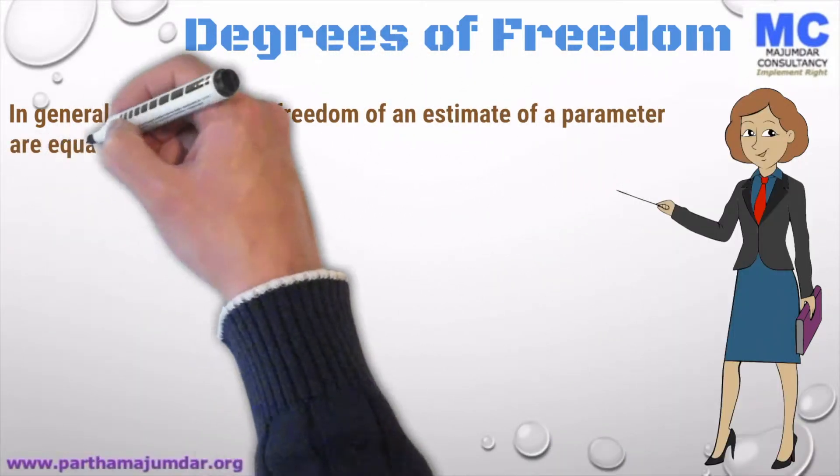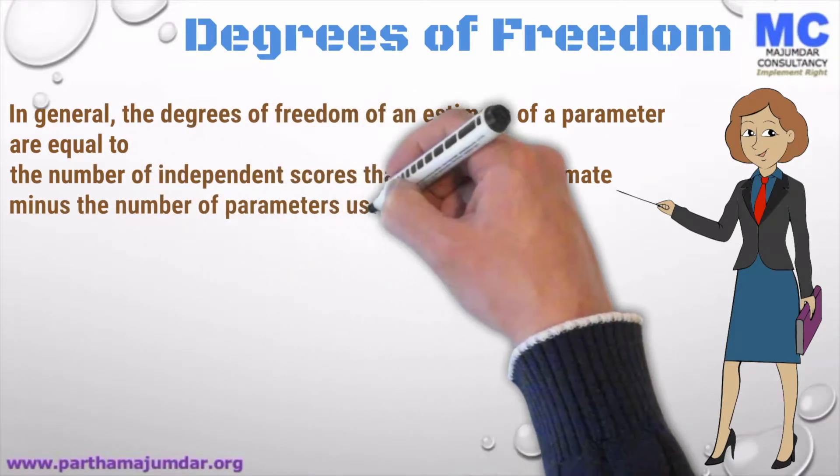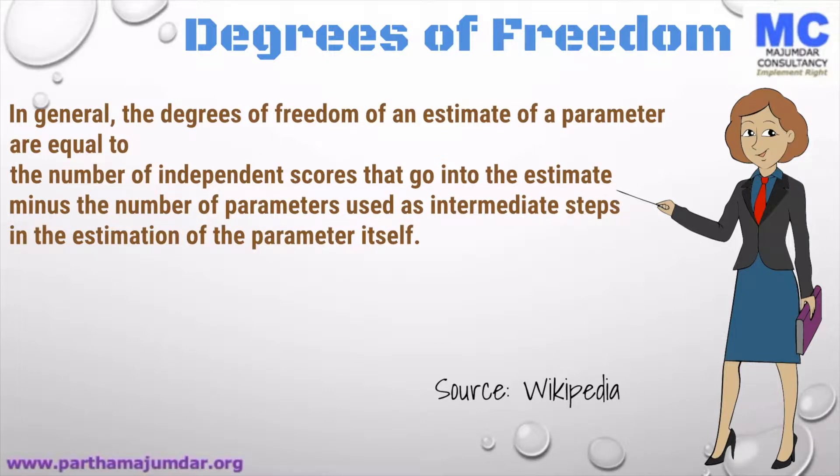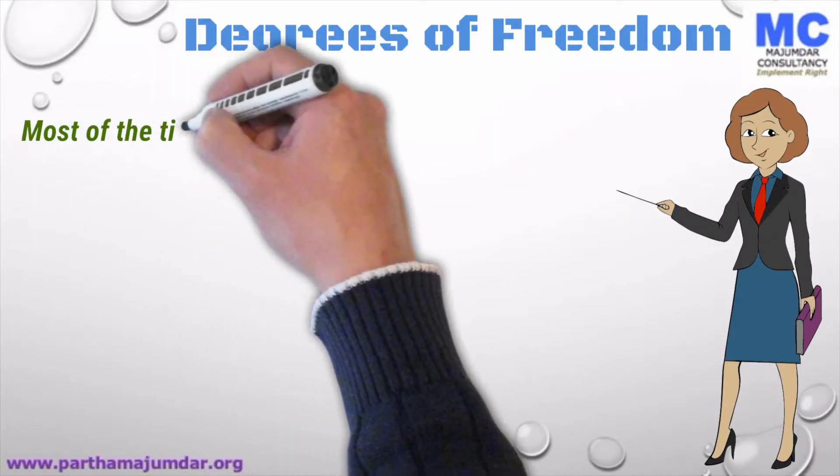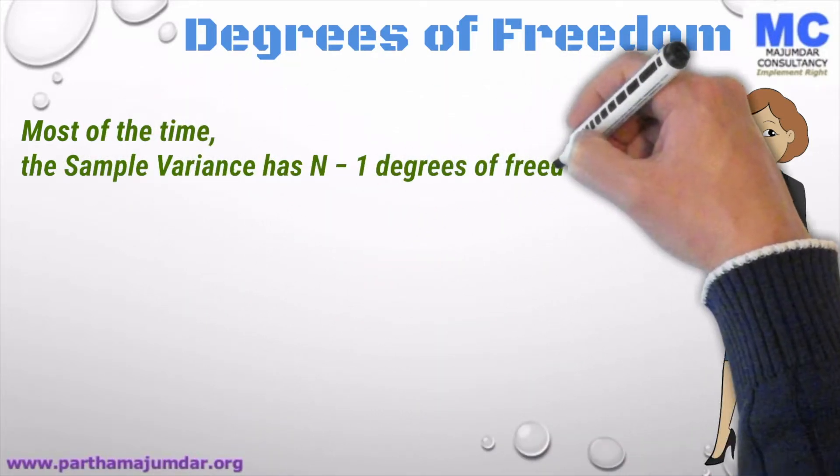In general, the degrees of freedom of an estimate of a parameter are equal to the number of independent scores that go into the estimate minus the number of parameters used as intermediary steps in the estimation of the parameter itself. This will become clear through an example.